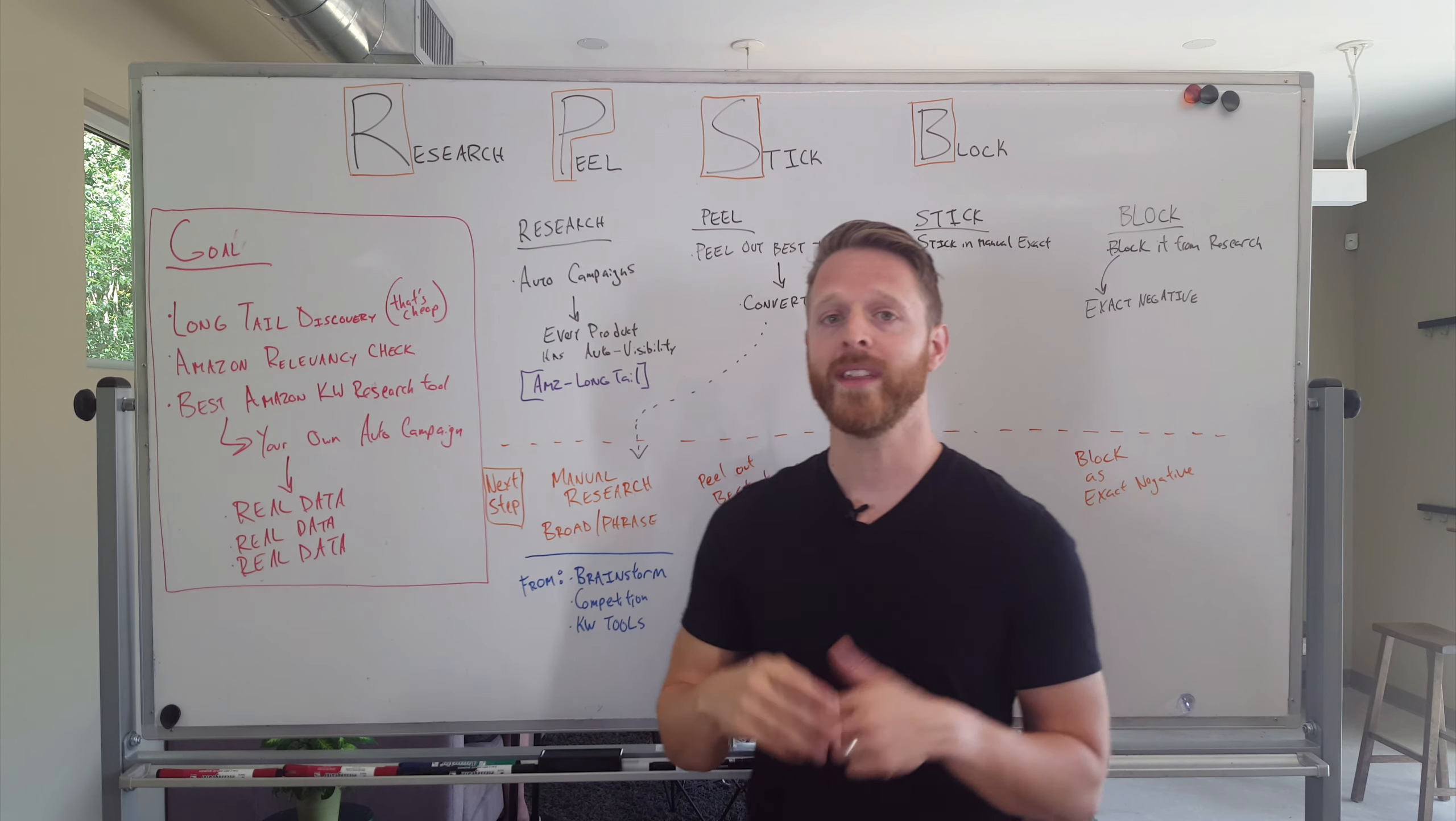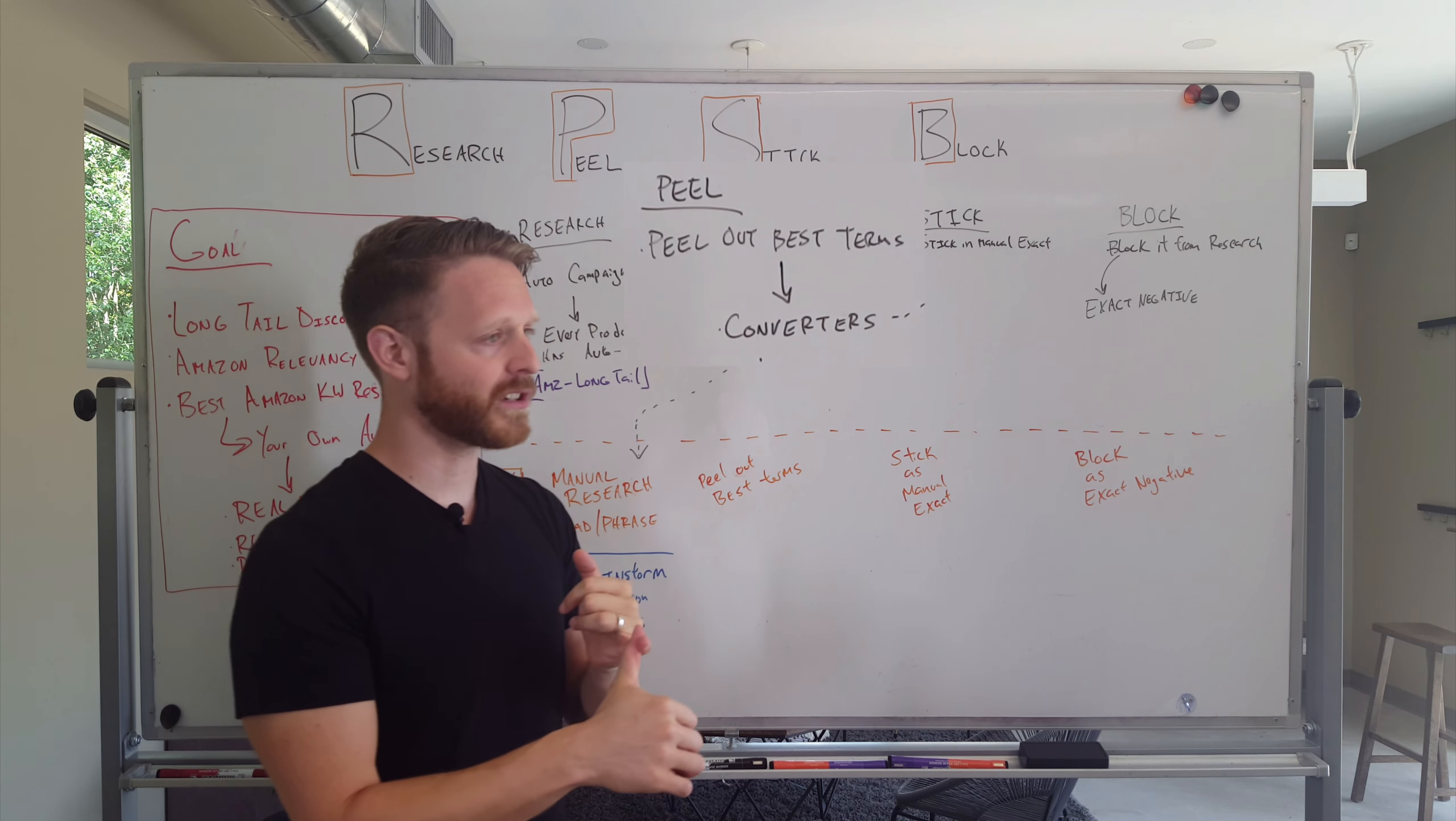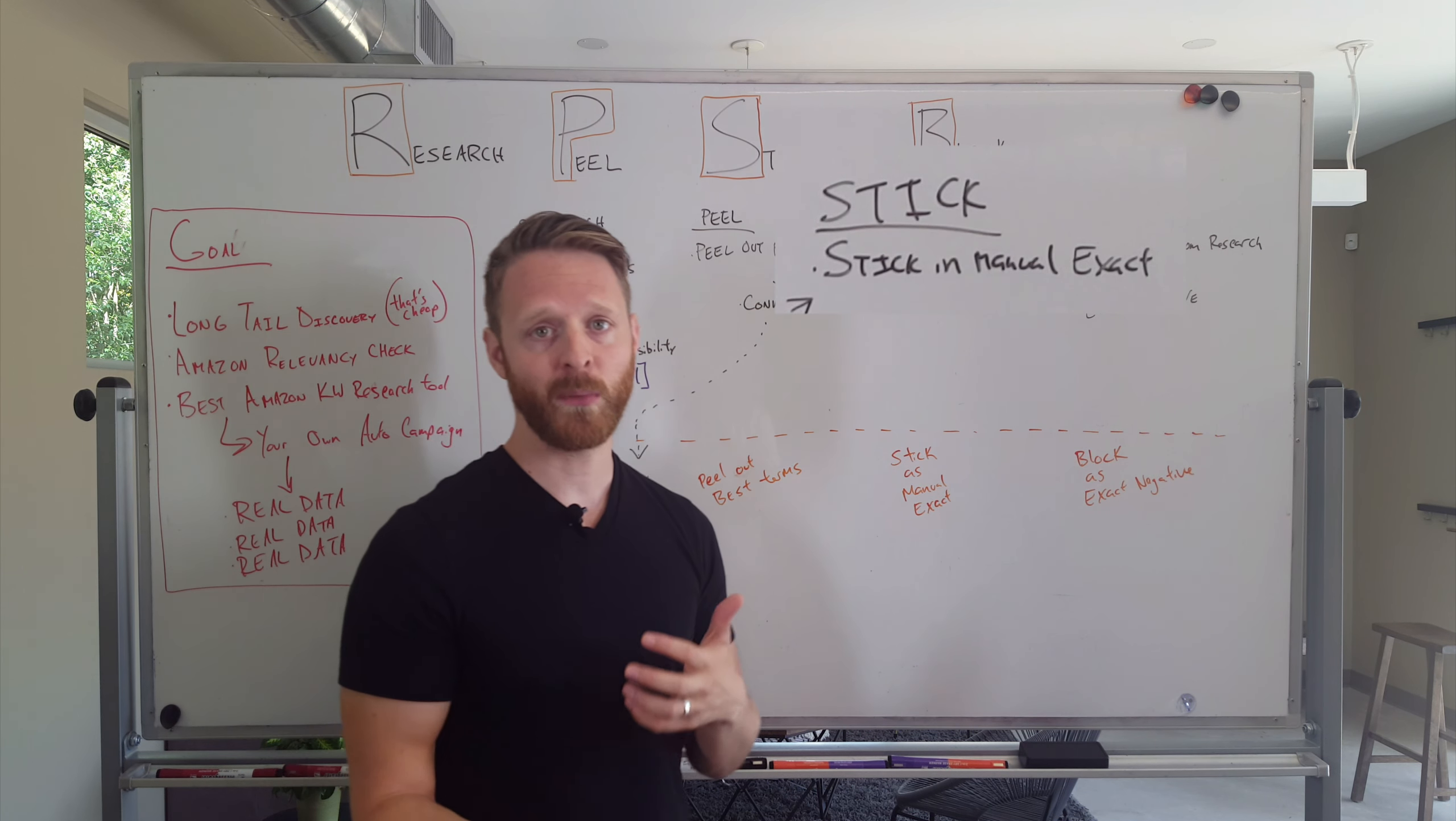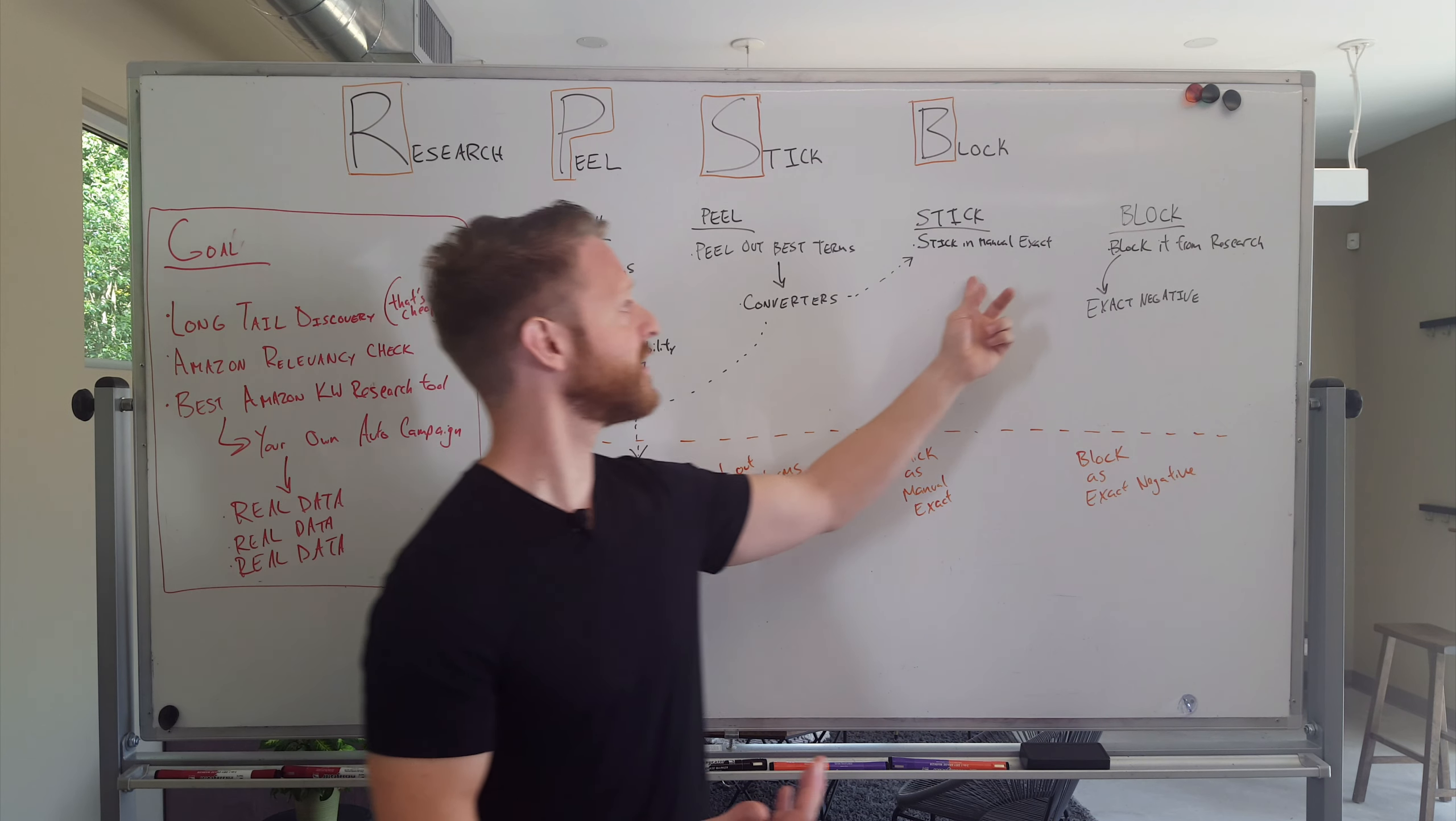So once we set this up, we then peel out the terms that convert. We want to peel out the very best terms, so if it gets a conversion we peel that out. And then we stick it into a manual exact. So a lot of times if I'm launching an account, maybe the budget is a little smaller or something like that, I'll do exactly this: I start with an auto, let my conversions come in, take out those best terms, and stick it into a manual exact.